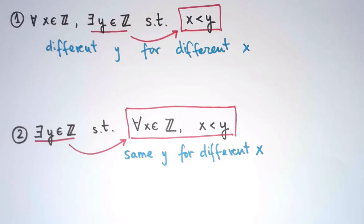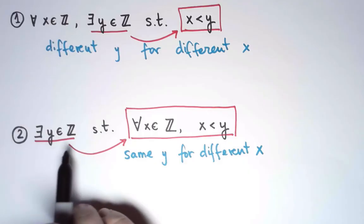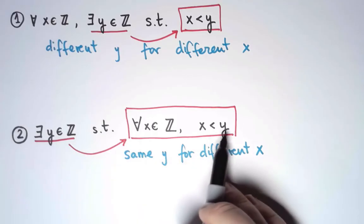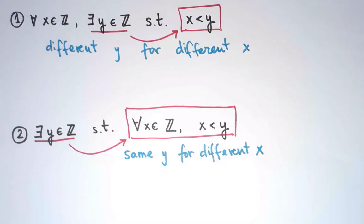So now that we understand that, let's try to write this in English as a sentence. The second statement says that there exists an integer y satisfying that, and it's the same one. So in other words, there is an integer y that is greater than all the integers.